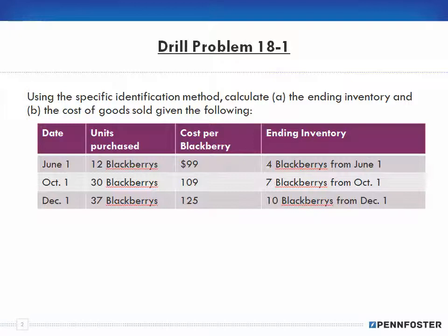Our ending inventory has 4 blackberries from June, 7 blackberries from October 1st, and 10 blackberries from December 1st. That means 4 out of 12 from June were sold, 7 out of 30 for October, and 10 out of 37 for December. So we need to find what our ending inventory amount is.